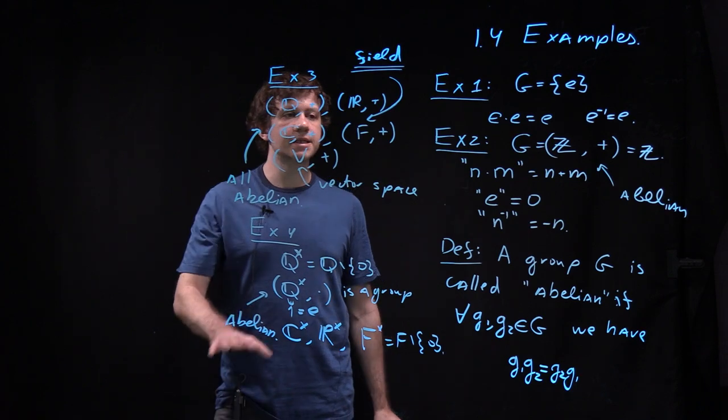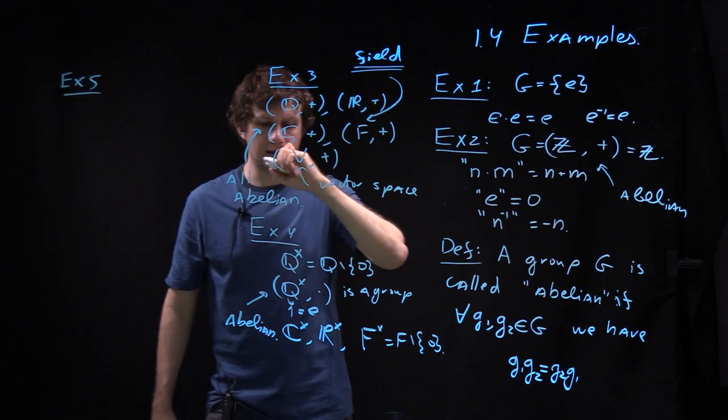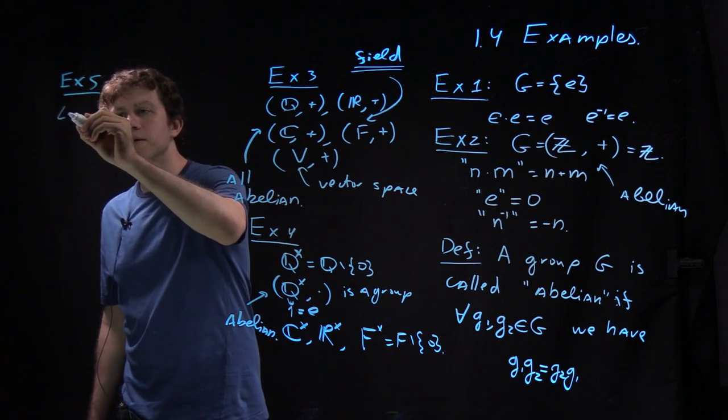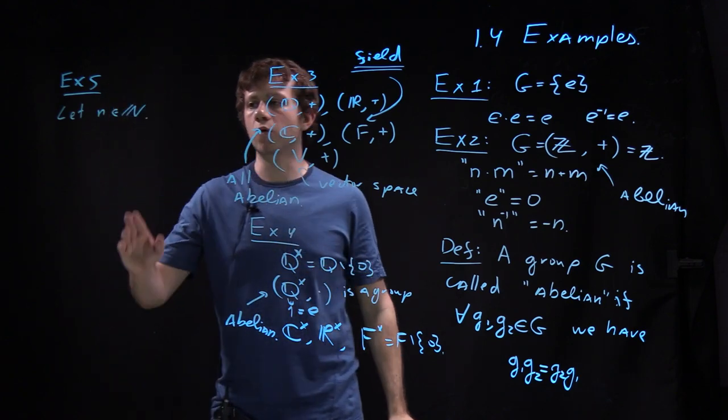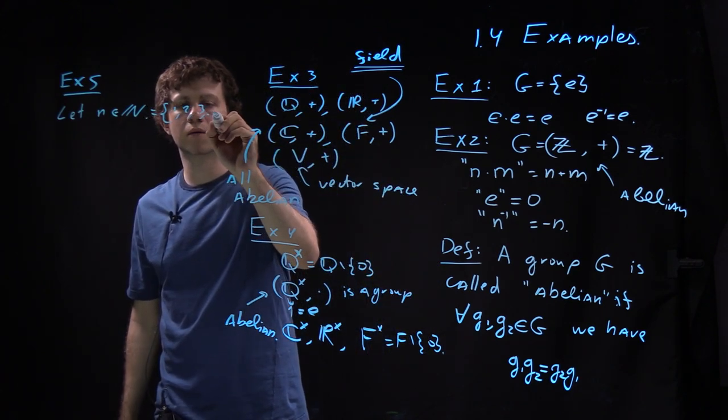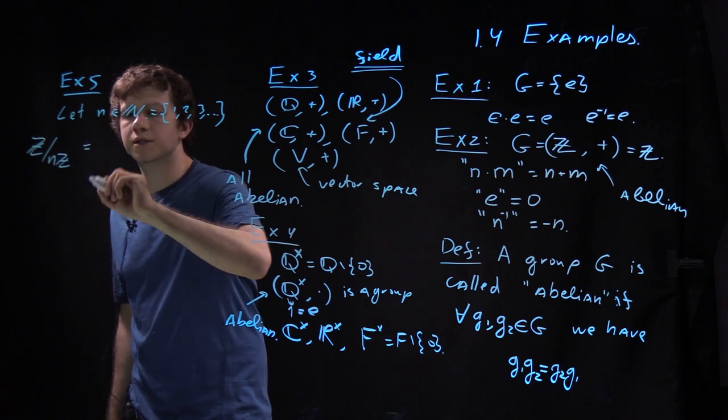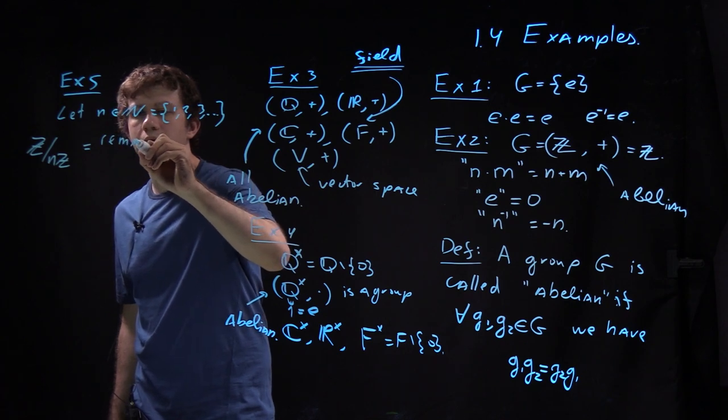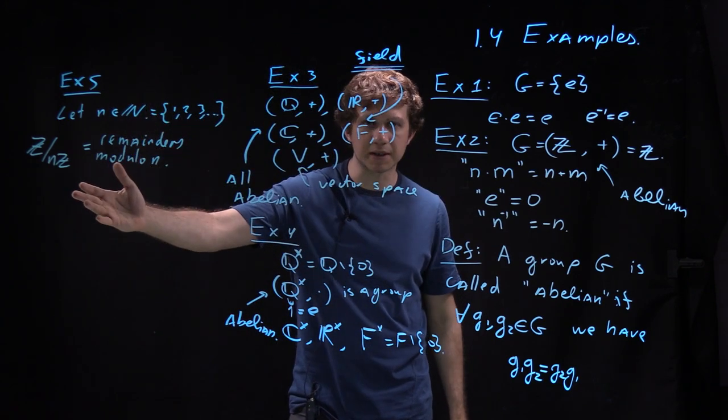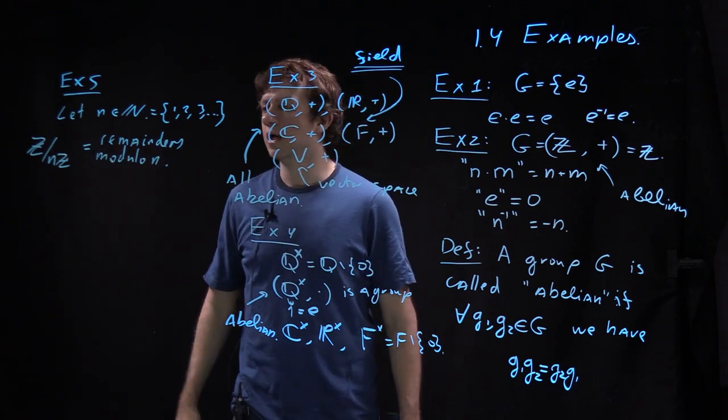So last abelian group I want to mention in this sequence of examples is example number five. It is slightly more complicated, extremely important for what will follow. So let n be some positive integer. So positive integers are, at least in convention I take, one, two, three, four, and so on. So zero is not there. And then Z over nZ is remainders modulo n. So in questionnaire I asked you whether you know what this thing is and it's absolutely vital for this course. So we will do some refreshments on that and I will discuss it from various perspectives later on in the course.